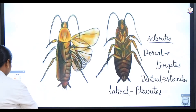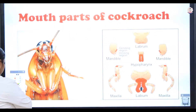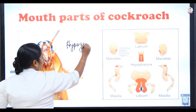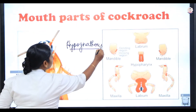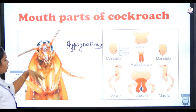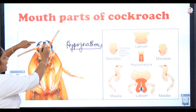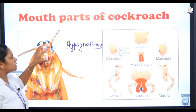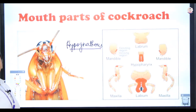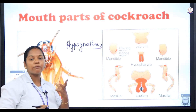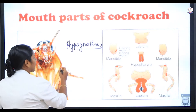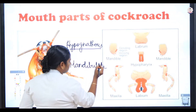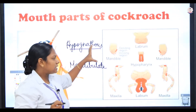Now let us see the mouth parts of the cockroach. The mouth of the cockroach is described as hypognathous — hypo means below, gnathus means mouth. The mouth of the cockroach faces downwards and is present on the ventral side. So the mouth of the cockroach is hypognathous. It is of the biting and chewing type — the cockroach can bite food with the help of jaws and chew it, so we call the mouth mandibulate type.